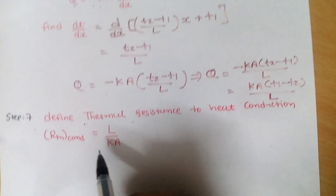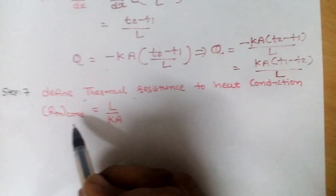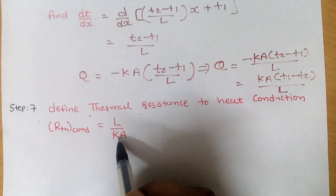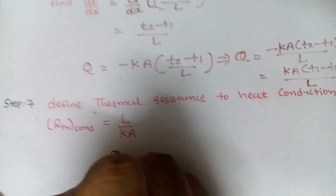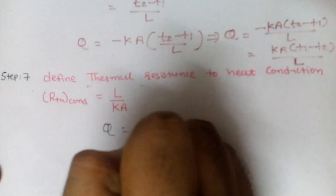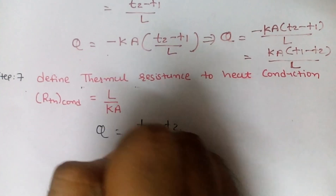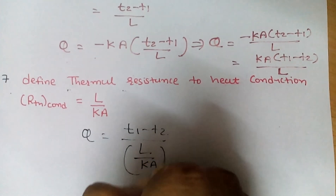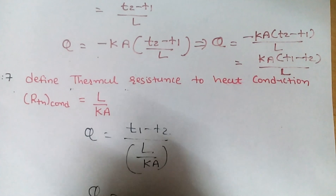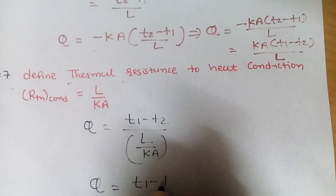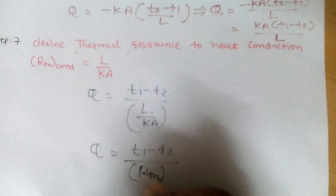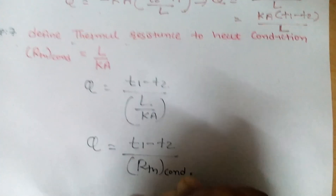In step seven, we define thermal resistance to heat conduction. R_th(conduction) = L/(KA). So the above equation becomes Q = (T1 − T2) / R_th(conduction).